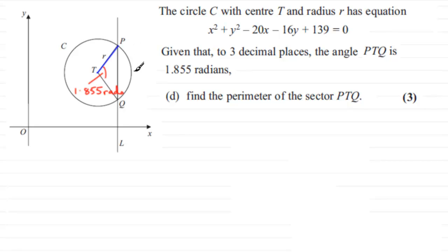In the previous part of the question, we found out that the radius was 5 units. If you'd like to have a go at this, just pause the video and come back when ready. To get the perimeter of this sector, we first need to find the length of the arc PQ.